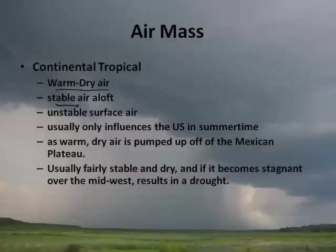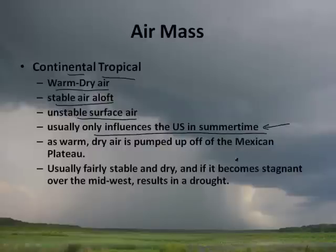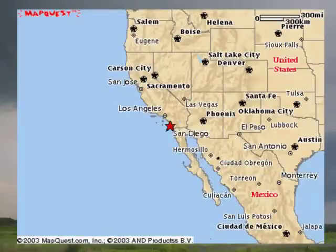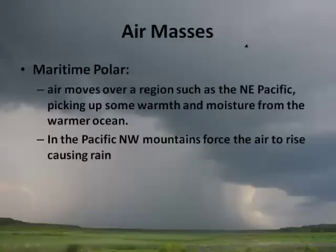Continental tropical air is warm, dry, and stable aloft but unstable at the surface. It usually only influences the United States in the summertime. Warm dry air is pumped up off the Mexican plateau, forming a stable, dry air mass that can become stagnant over the Midwest, resulting in drought. For Colorado, this air mass moves up from Mexico and Arizona, covering parts of the state — which is why we have so much sunshine.